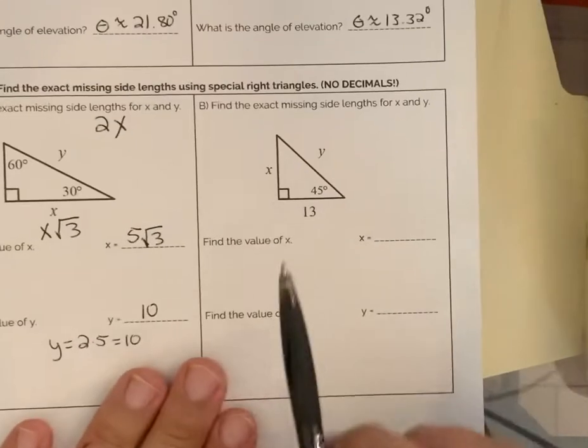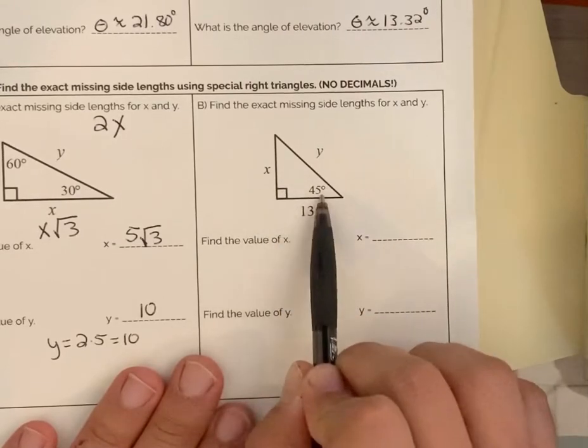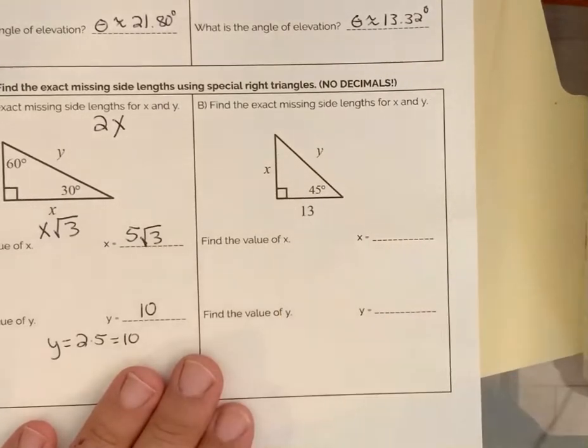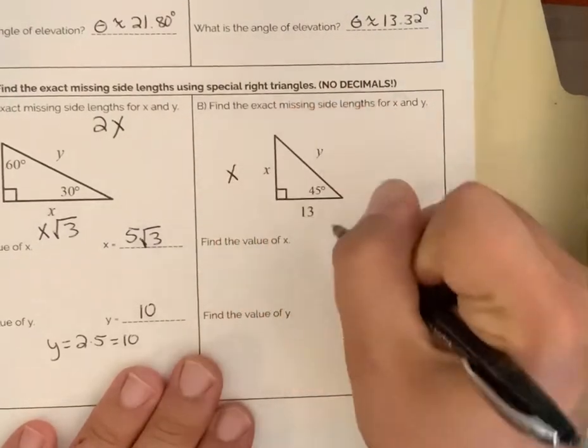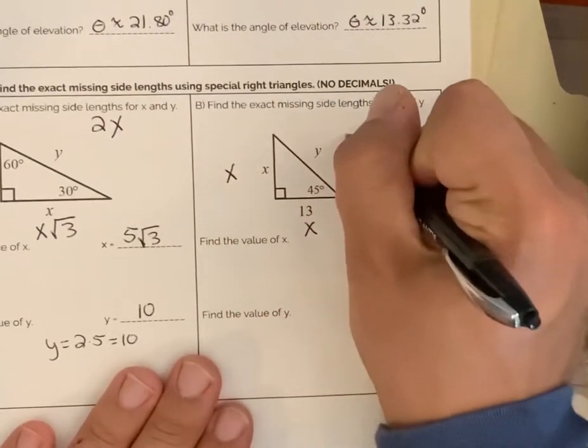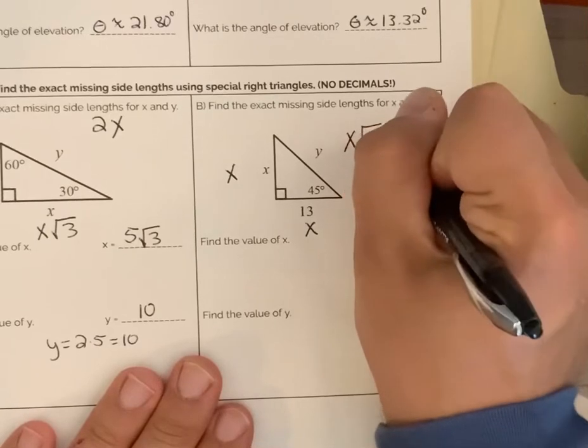In looking at this triangle, this is a 45-45-90 triangle. In just remembering the ratios, this is x, x, and x times the square root of 2.